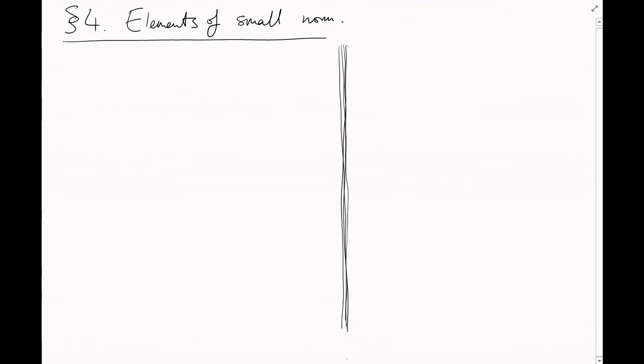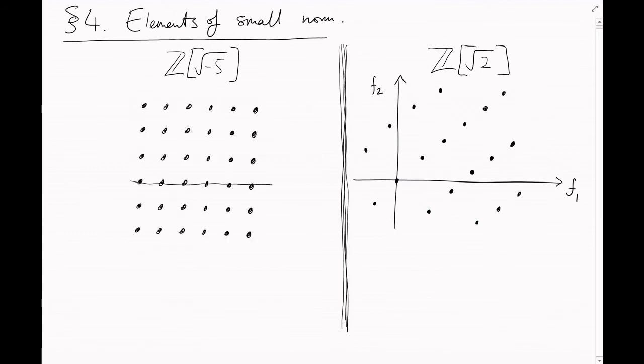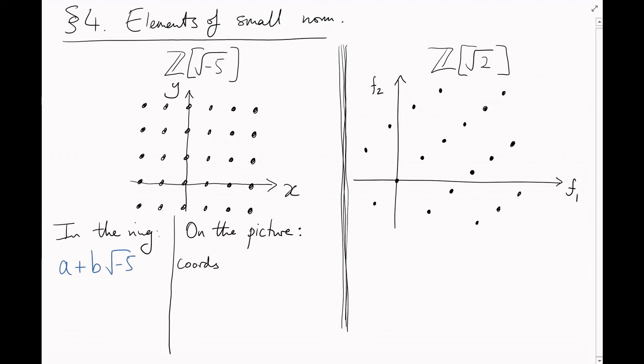We've seen two pictures of two rings that look very similar. The one on the left is Z root minus 5, embedded in the complex plane. And the one on the right is Z root 2, simultaneously embedded in the real numbers in two different ways, using f1 and f2. I'm just going to deal with the left hand picture for now. And I'm going to call the axes x and y. Let me be explicit in relating elements of the ring with points in this picture.